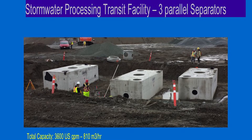This is a system of three large parallel separators at a transit facility, with a total capacity of 3600 US GPM — 810 cubic meters per hour — during the installation.